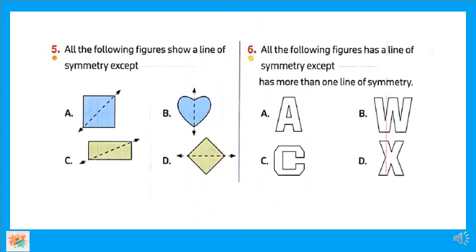Question number five: all the following figures show a line of symmetry except — مين؟ كلهم عندهم line of symmetry ما عدا واحد فيهم. مين هو اللي حذرنا منه من أول الفيديو لغاية دلوقتي؟ شاطرين، برافو عليكو. فعلاً letter C ده الوحيد اللي ما ينفعش يكون line of symmetry.